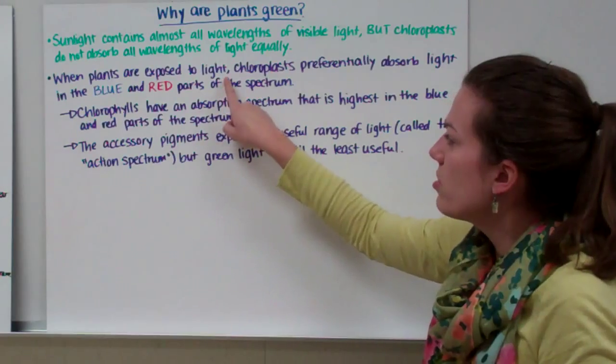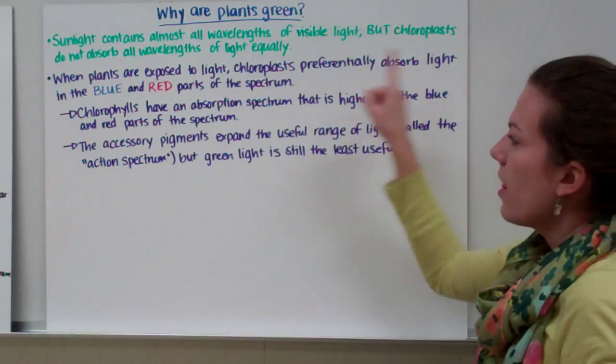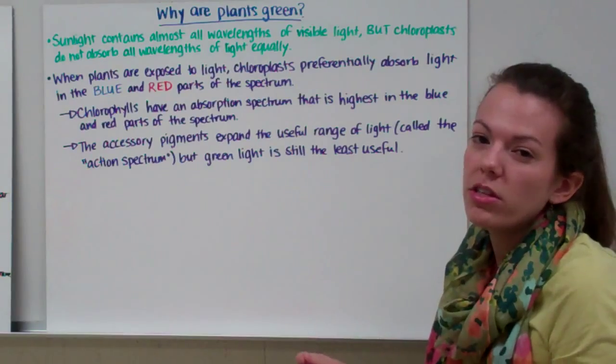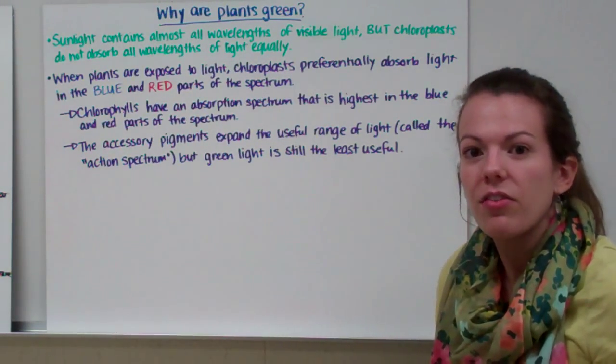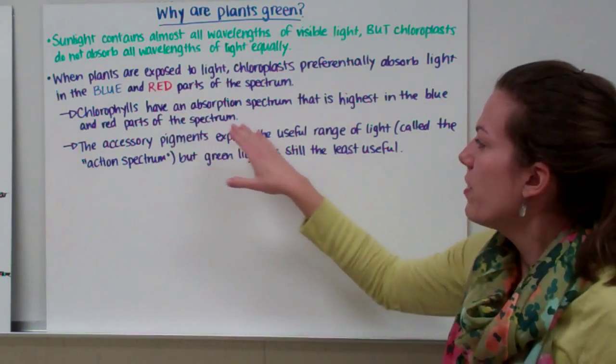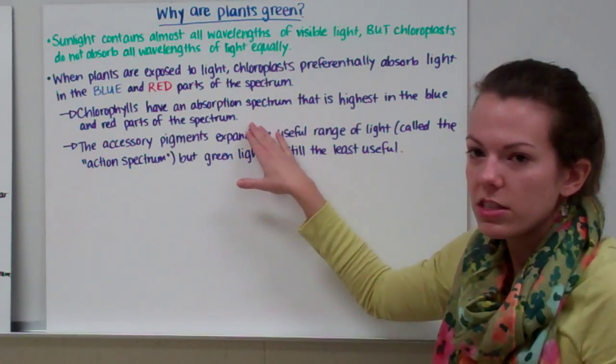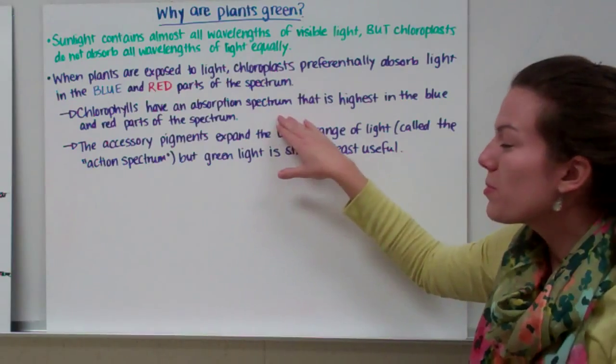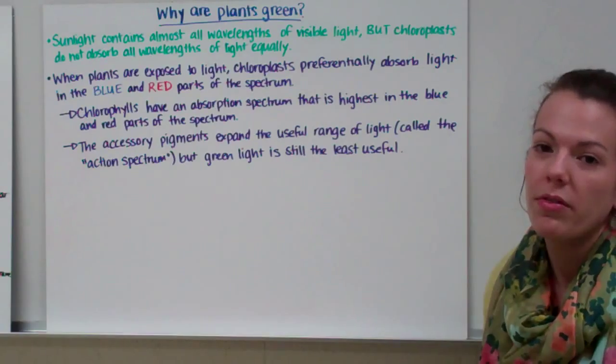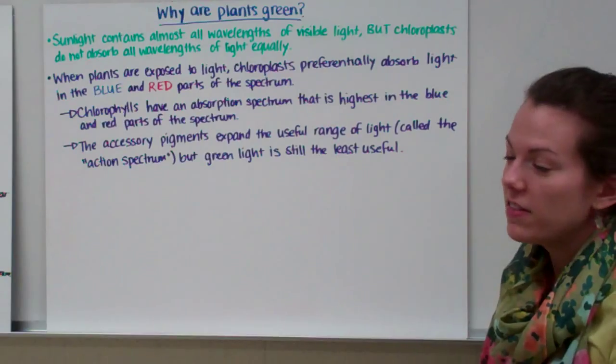When plants are exposed to light, chloroplasts preferentially absorb mostly light in the blue and the red parts of the visible light spectrum. So they're mostly absorbing red and blue. That's why you don't see plants as being red and blue, because that light is absorbed and not reflected by the plant. Chlorophylls have an absorption spectrum that is highest in the blue and red parts of the spectrum. Absorption spectrum is just an easy or simple way of saying this is the part of the visible light that they absorb the most.